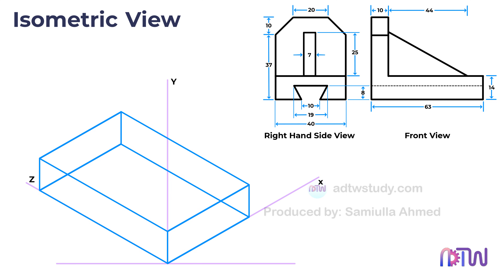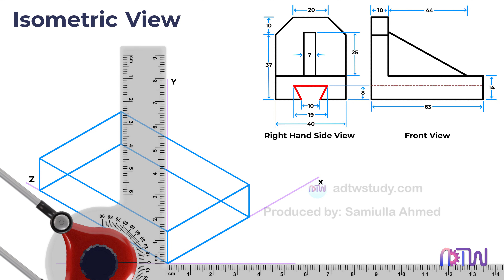To construct the slot, we need to draw its outline on one side of the base. According to the given information, the width of the slot is 10 millimeters at the bottom and 19 millimeters at the top. The height of the slot is 8 millimeters. To begin, mark a point 8 millimeters above the base along the y-axis and draw a light line parallel to the x-axis to represent the height of the slot.